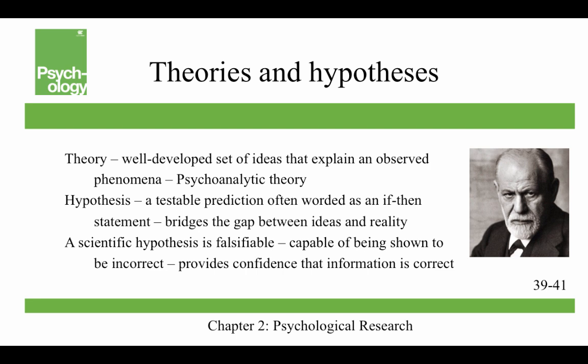A theory is a well-developed set of ideas that explain an observed phenomena. For example, we can talk about psychoanalytic theory — Freud's theory that you can divide the mind into the id, the ego, and the superego. A hypothesis is a testable prediction, often worded as an if-then statement, and it bridges the gap between ideas and reality. For example, due to gravity, I would hypothesize that if I drop my pen, it'll hit my desk — that is a confirmed hypothesis. It's tougher to make hypotheses about the id, the ego, and the superego.